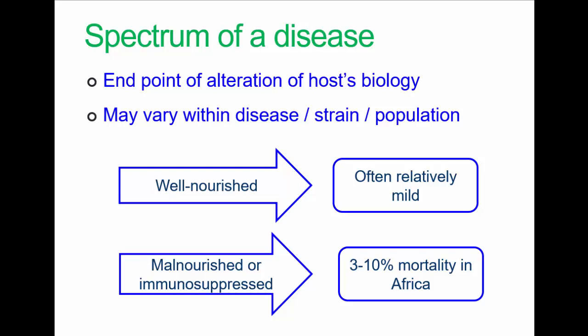Ultimately, the disease process ends either in recovery, disability, or death. We notice the difference between well-nourished people in the developed world and people who are malnourished or immune-suppressed in other parts of the world which aren't quite as well off.